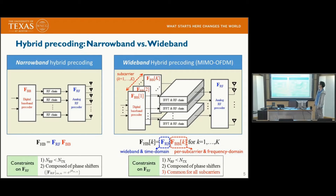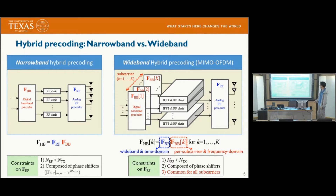In the narrowband hybrid pre-coding, there are two constraints on the analog pre-coder. The first is that the number of RF chains is less than the number of antennas. The second is that the analog pre-coder is composed of phase shifters. In the wideband hybrid pre-coding, there exists an additional constraint that the analog pre-coder FRF should be common for all subcarriers.